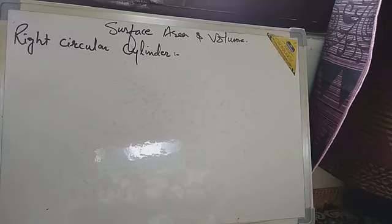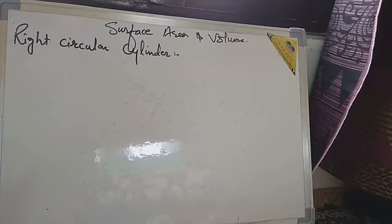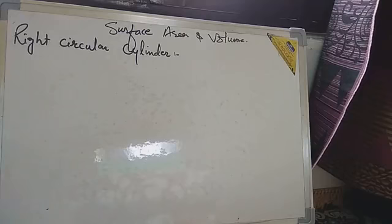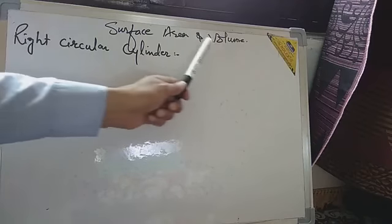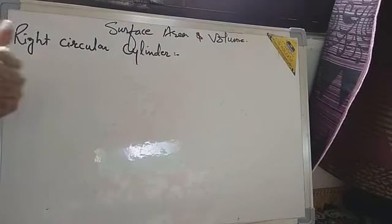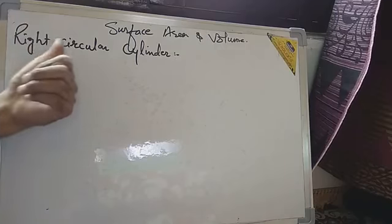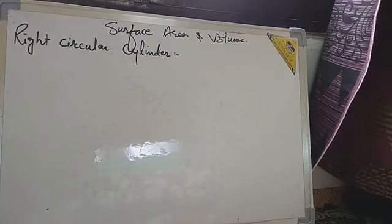My dear students, today in continuation of the definition of some solid shapes in the chapter surface area and volume, we have to discuss a right circular cylinder.